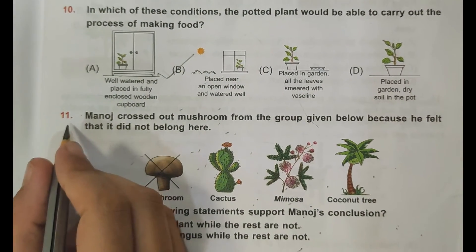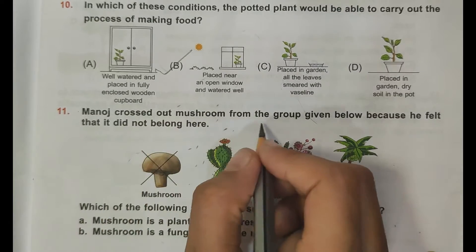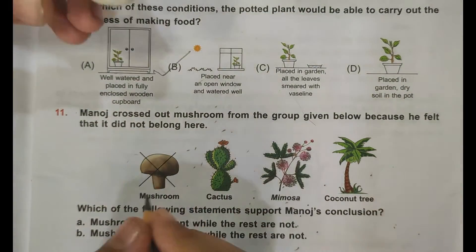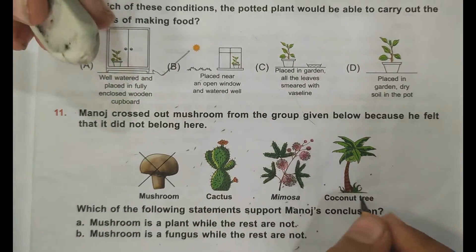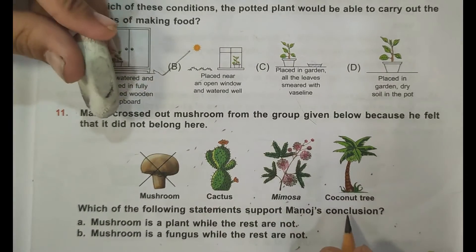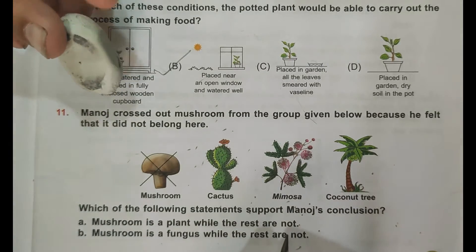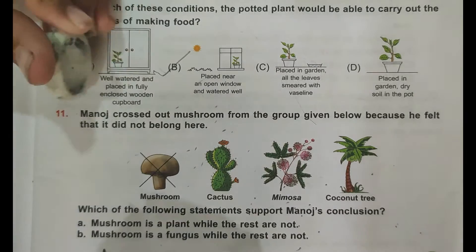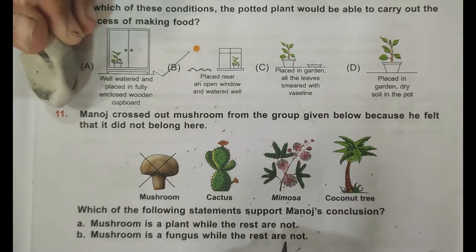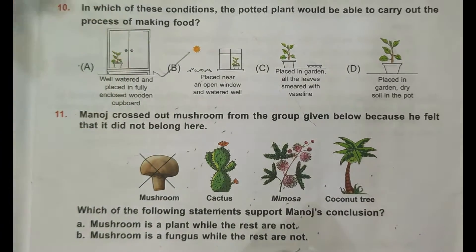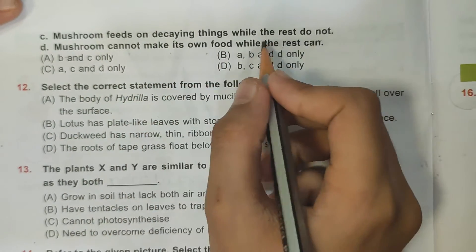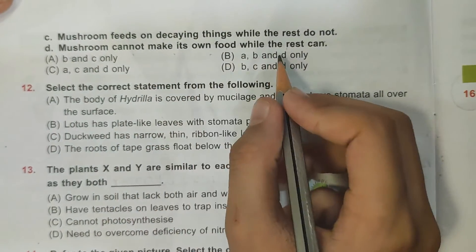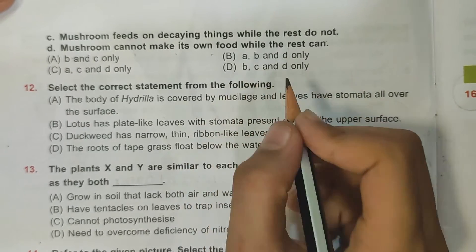Eleventh question: Manoj crossed out mushroom from the group given below because he felt that it did not belong there. Here mushroom is with cactus, mimosa, and coconut tree. Which of the following statements support Manoj's conclusion? Mushroom is a plant while the rest are not - that's incorrect because mushroom is not a plant and rest are plants. B: mushroom is a fungus while the rest are not - that is true. C: mushroom feeds on decaying things while the rest do not - yes that's also true. D: mushroom cannot make its own food while the rest can - that's true. So D: B, C, and D only is the correct answer.